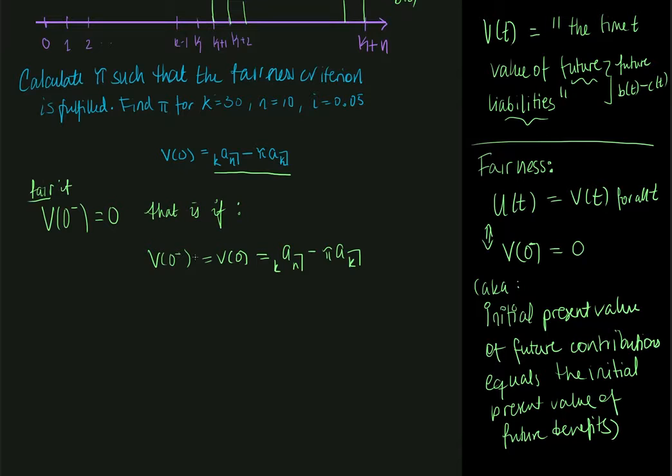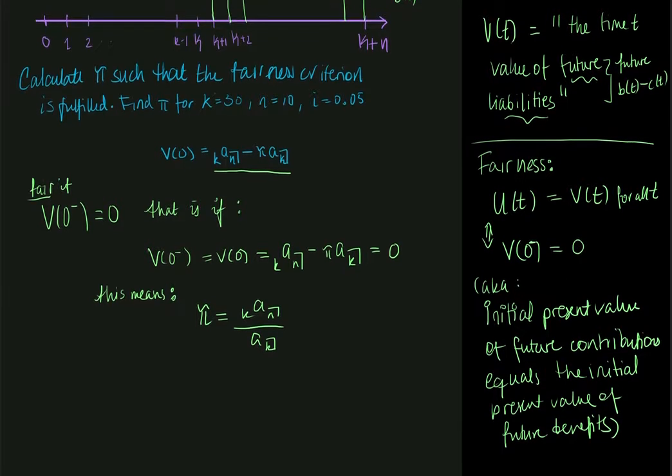So fairness is fulfilled if this thing here has the value 0. So this means, what does this mean? This implies that if we try to isolate pi, then pi will have to be k*an divided by ak.